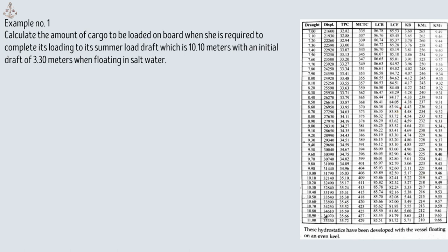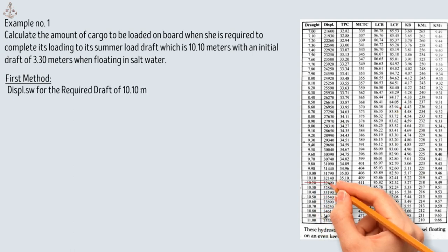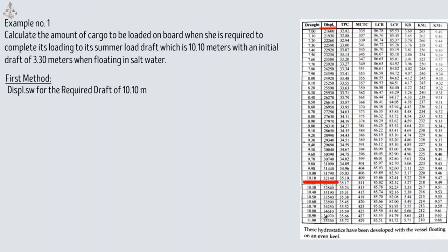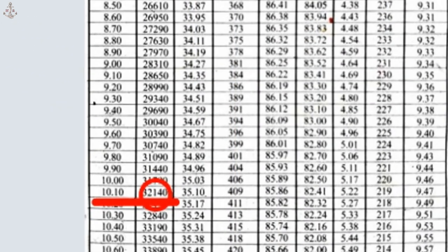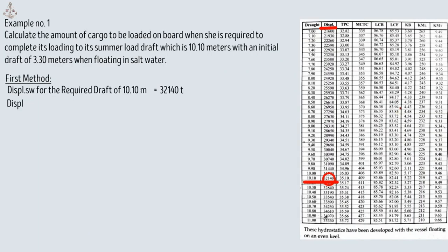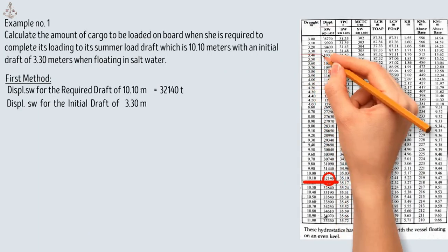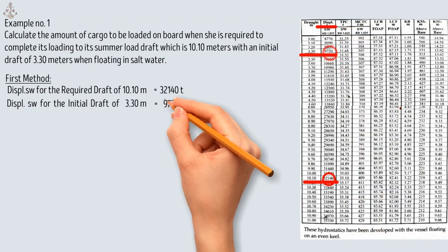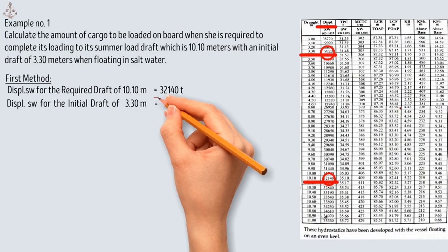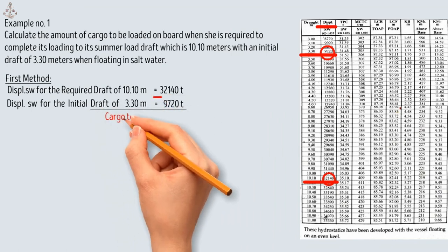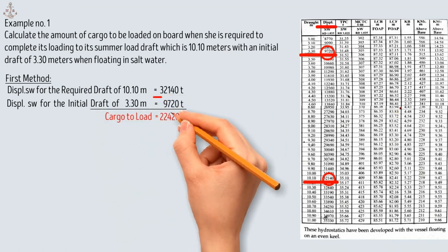In this calculation, I disregard deductible weights such as remaining water ballast, the ship's constant, and any other deductible weights. The first method is the simplest: extract the displacement in salt water for the required draft of 10.10 meters, which is 32,140 tons. Then extract the displacement for the initial draft of 3.30 meters, which is 9,720 tons. The difference between the two displacement values is the cargo to load, which is 22,420 tons.